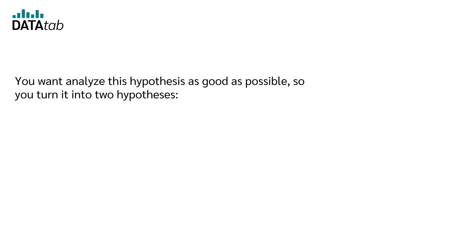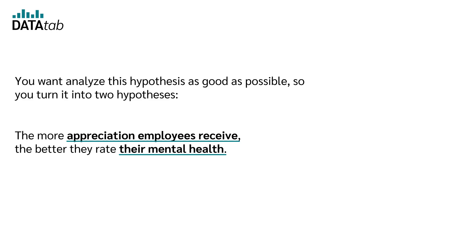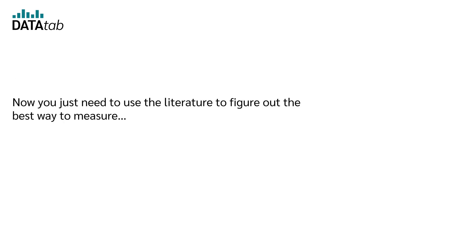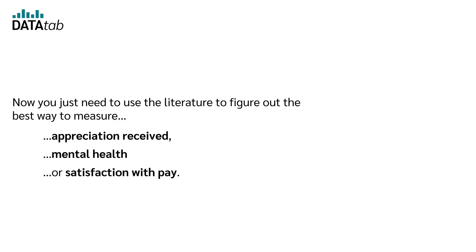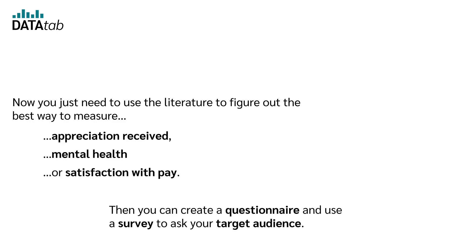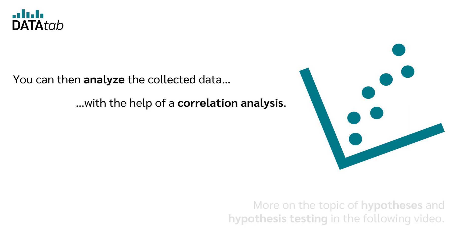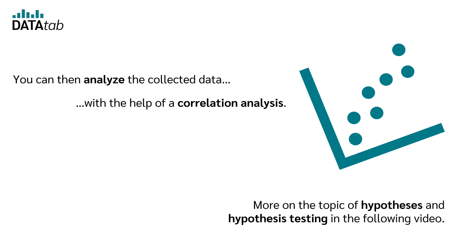To analyze this hypothesis as thoroughly as possible, you turn it into two hypotheses: the more appreciation employees receive, the better they rate their mental health; and the more dissatisfied employees are with their pay, the worse they rate their mental health. You then use the literature to figure out the best way to measure appreciation received, mental health, or satisfaction with pay. Then you create a questionnaire and use a survey to ask your target audience. You can analyze the collected data, for example, with the help of a correlation analysis. More on hypotheses and hypothesis testing in the following video.